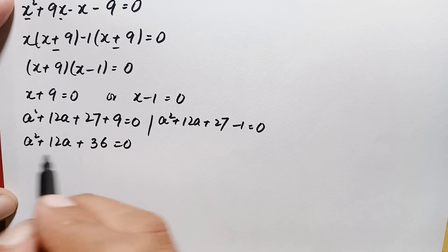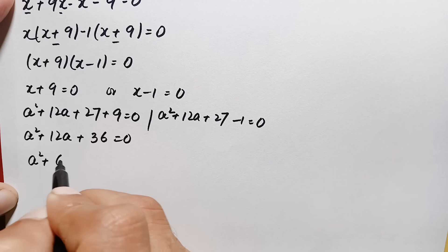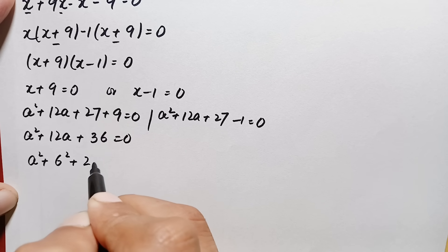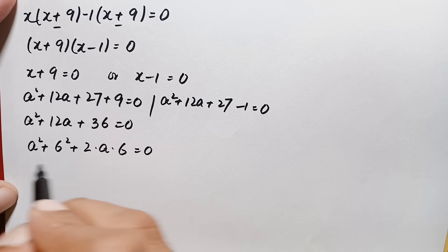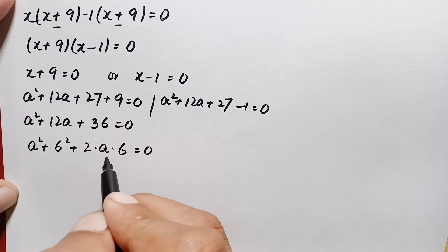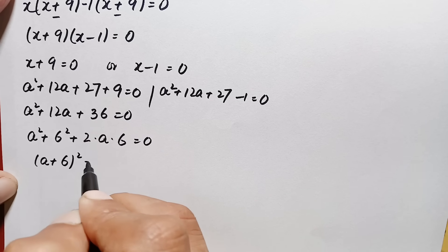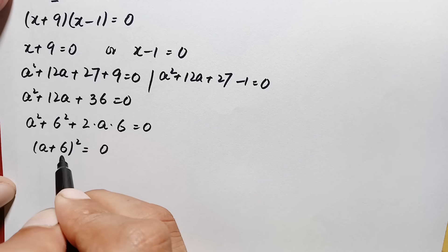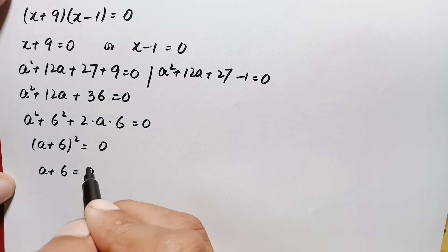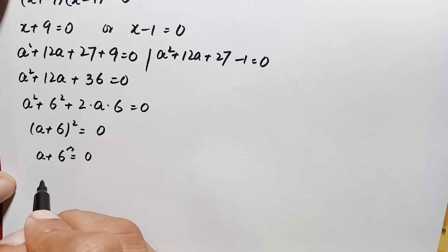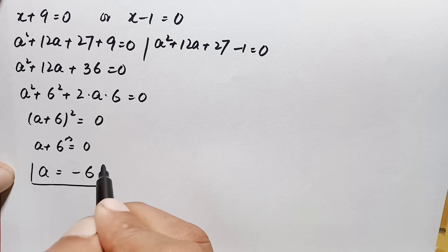For the first equation, a²+12a+36 = 0 can be written as a²+2(a)(6)+6² = 0, which is the identity (a+b)² = a²+2ab+b². So this becomes (a+6)² = 0. Taking the square root of both sides gives a+6 = 0, therefore a = −6. This is our first real solution.